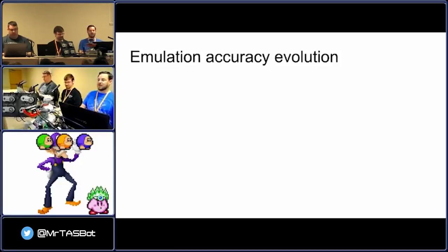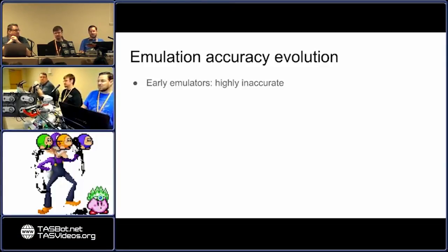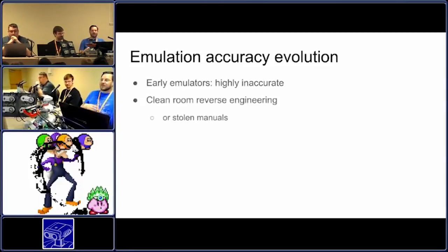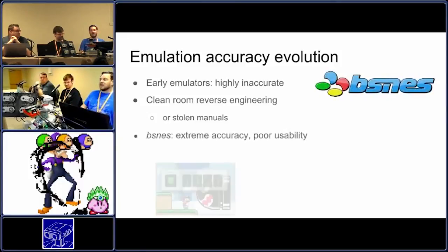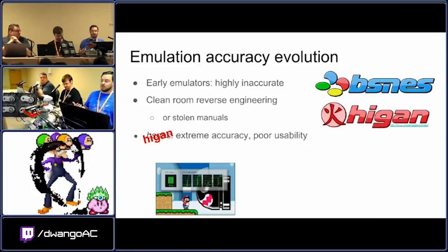A few things happened over time. The biggest one was definitely emulation accuracy becoming more advanced. In the early days — especially Fantasia — if you go back and watch that original Morimoto video, the sound is weird, the effects don't sound right, the speed is kind of funny. Through the process of clean reverse engineering, or just flat-out stealing manuals, a lot of people were able to work on these different emulators and move them from poor accuracy to really high accuracy.